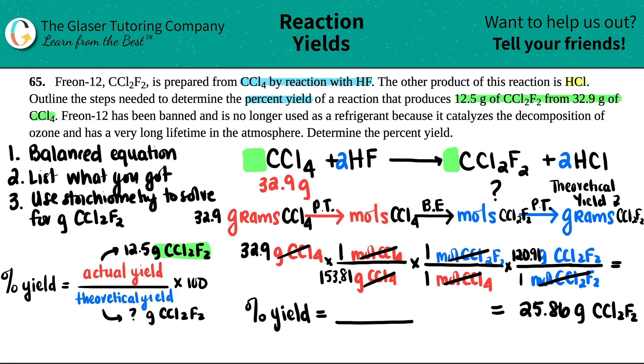The percent yield is the actual yield, 12.5, and then we should have gotten 25.86 times 100. You could put the grams, but they're the same units. So I don't really like to do that. And then here we go. Percent yield. Percent yield equals 12.5 divided by 25.86 times 100. I get 48 point... and let's see, three sig figs all across the board. So yeah, 48.3%.